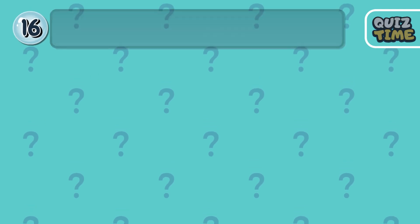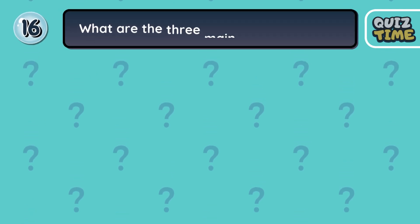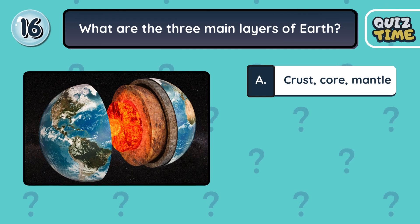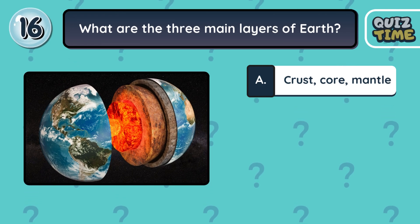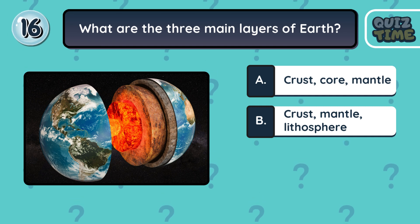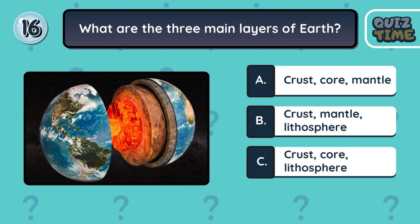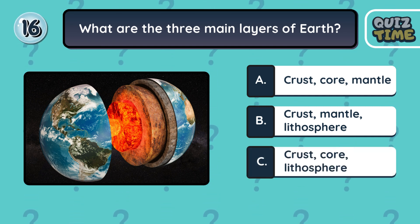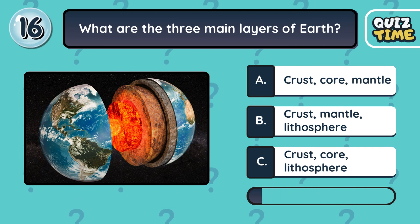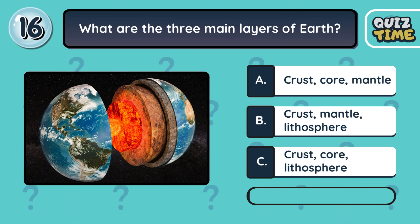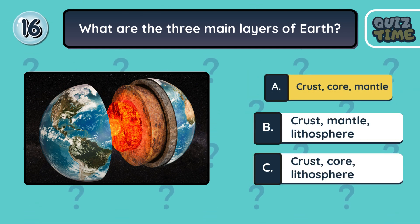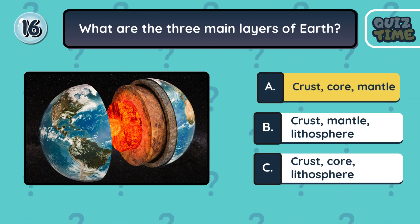Number 16. What are the three main layers of Earth? A. Crust, core, mantle. B. Crust, mantle, lithosphere. C. Crust, core, lithosphere. The correct answer is A. Crust, core, mantle.